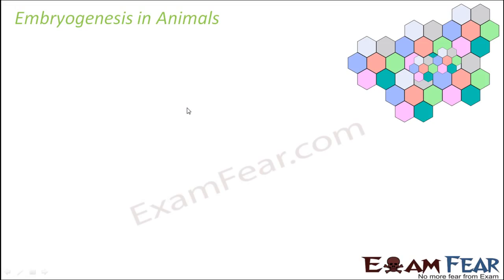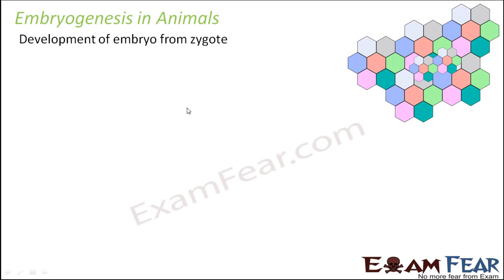We understood that the zygote is going to undergo some mitotic division to form the individual. But before a proper individual is formed, there is the early stage called embryo. So embryogenesis is the development of embryo from zygote.